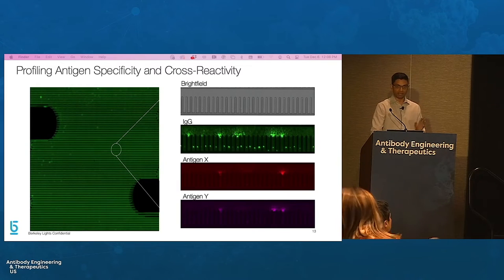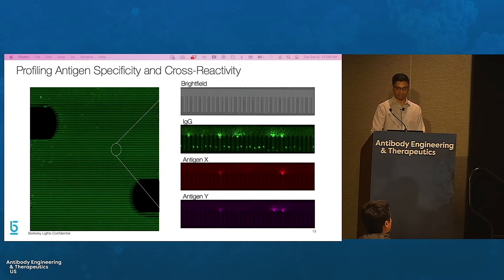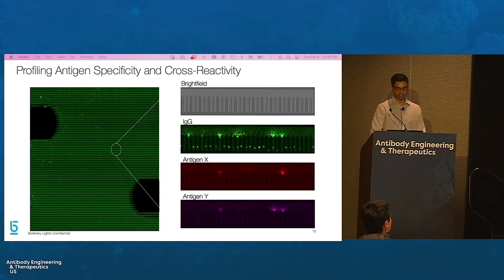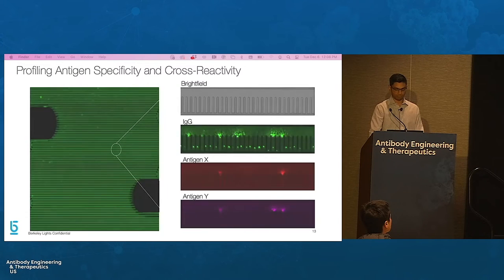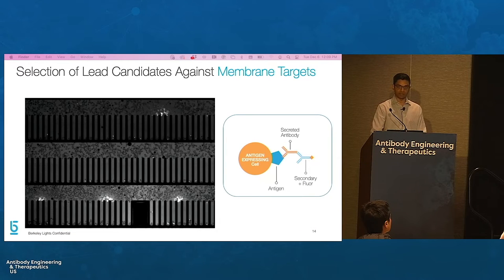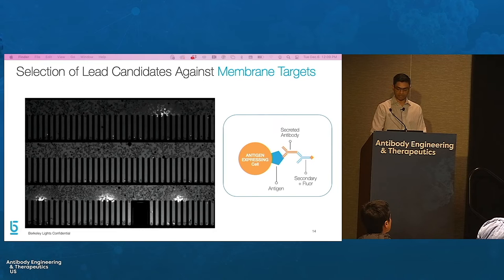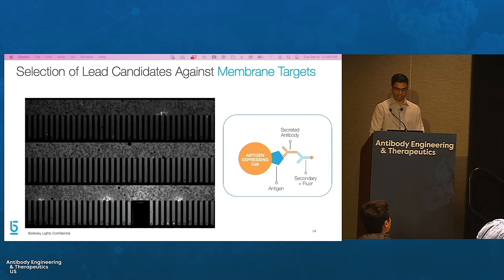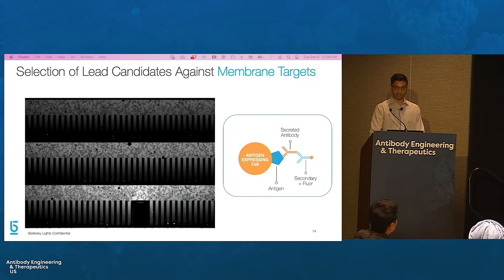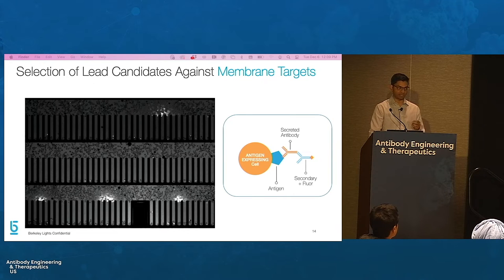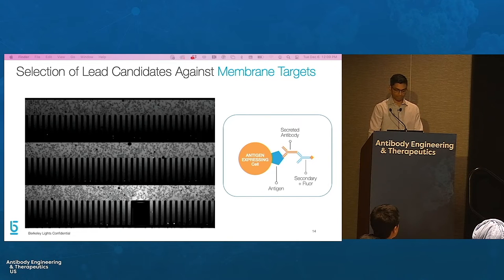These assays can be performed either in sequence or in parallel to assess antibody specificity and cross-reactivity. This figure depicts three assays performed in parallel that enable you to detect antibodies specific to antigen X, cross-reactive to antigens X and Y, or not specific to either antigen. Cell binding assays can also be used to down-select lead candidates against membrane targets, where cells over-expressing the target antigen replace the beads, and antibodies specific to these cell surface antigens are selected based on fluorescent halos centered on antigen-specific B-cells.